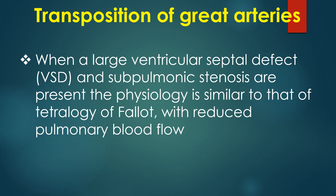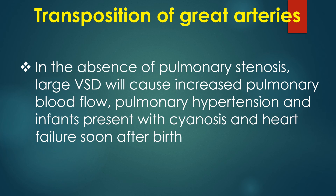When a large ventricular septal defect and sub-pulmonic stenosis are present, the physiology is similar to that of tetralogy of Fallot with reduced pulmonary blood flow. In the absence of pulmonary stenosis, a large VSD will cause increased pulmonary blood flow, pulmonary hypertension, and infants present with cyanosis and heart failure soon after birth.